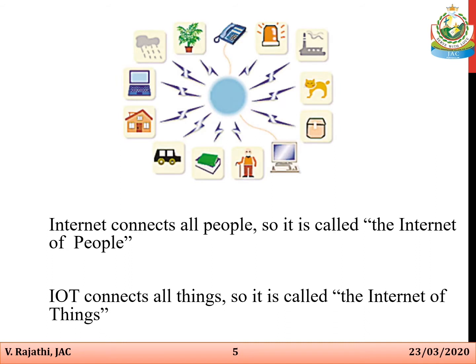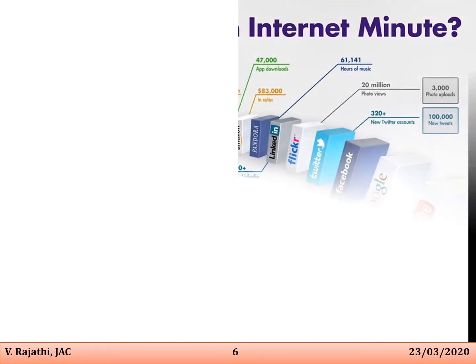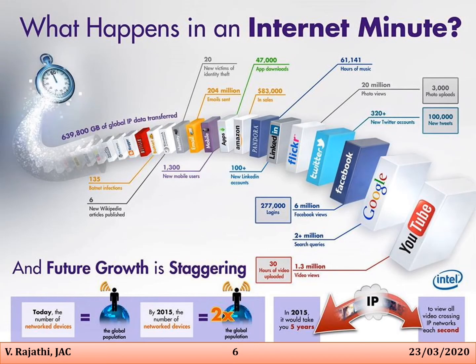The Internet connects all people, so it is called the Internet of People. IoT connects all things, so it is called the Internet of Things. In just one minute, this happens: over 2 million search queries on Google, 6 million Facebook views, and 1.3 million video views.